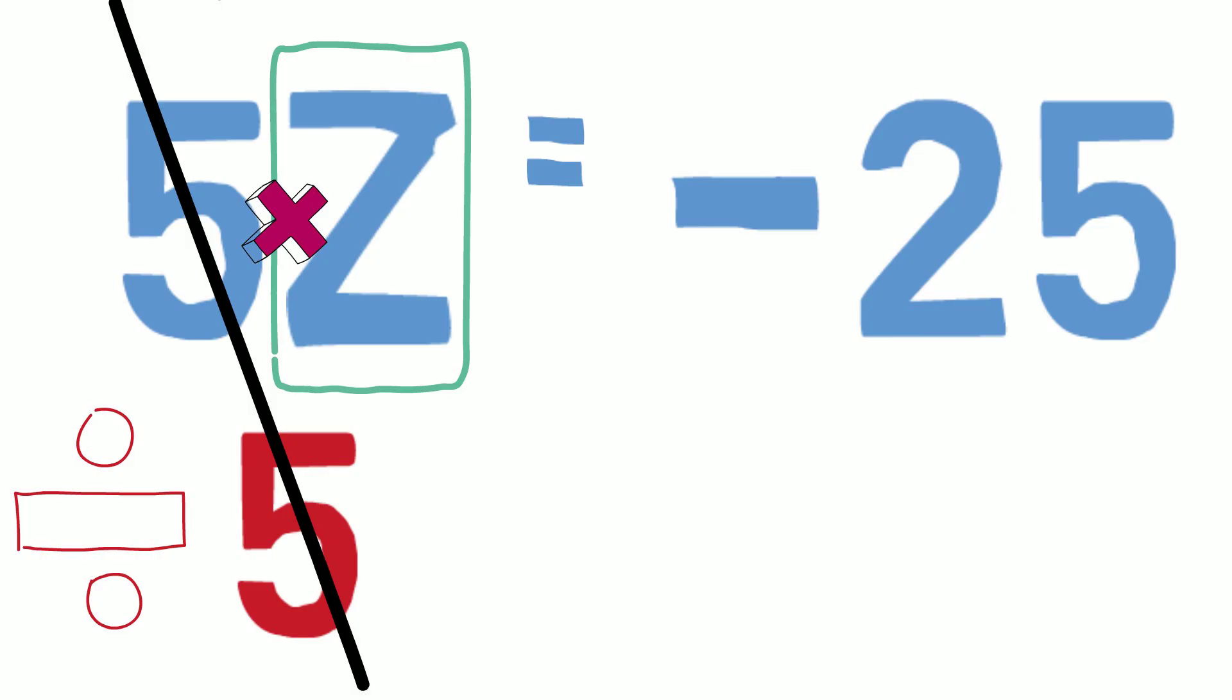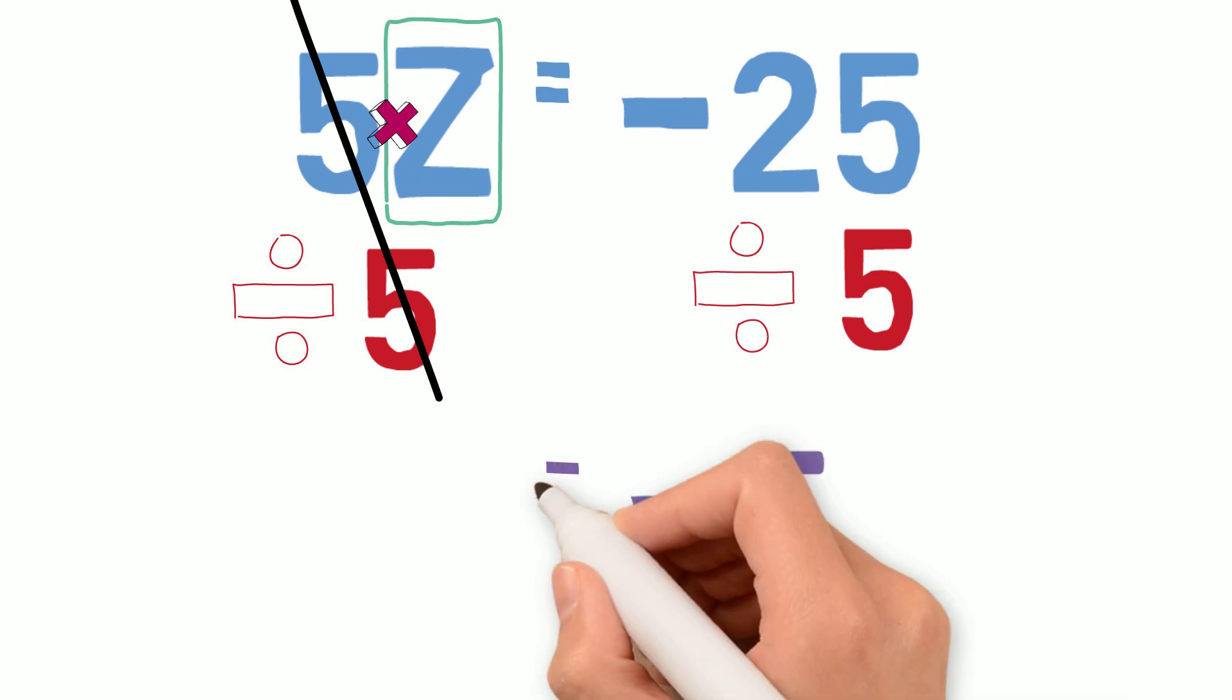And then I do negative 25 divided by 5, which gives me negative 5. So, my solution to this equation is z equals negative 5.